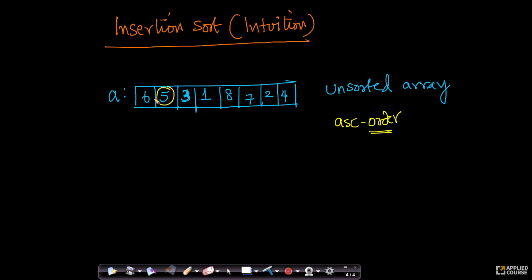Now let's look at the second element here, which is 5. This 5 is smaller than 6. So in the final sorted array, this element 5 or key 5 should be on the left-hand side of 6, because we want the array to be in ascending order. In the final sorted array, this 5 should be on the left side of 6, not on the right side.